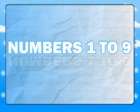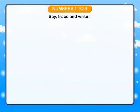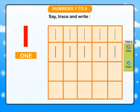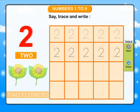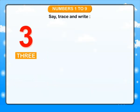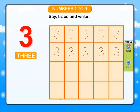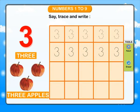Numbers 1 to 9. Say, trace and write. 1 — O-N-E, 1 star. 2 — T-W-O, 2 flowers. 3 — T-H-R-E-E, 3 apples.